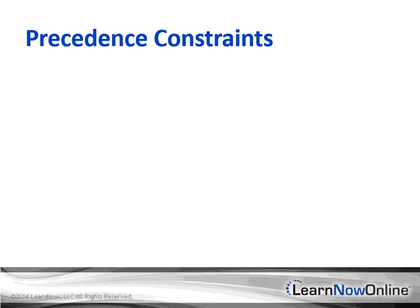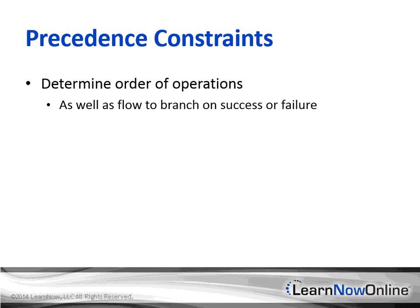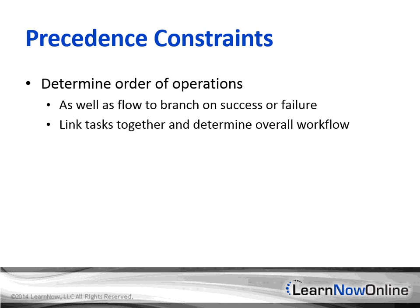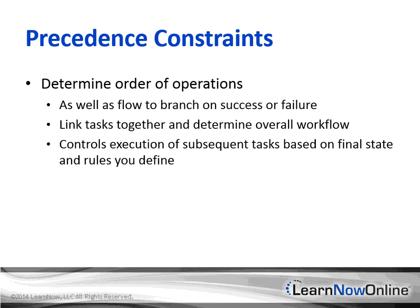Precedence constraints determine the order of operations through the control flow, and also allow the flow to branch based on the success or failure of a task. They link tasks together and determine the overall workflow defined within your package. A constraint controls the execution of a subsequent task based on the final state of the preceding task and the rules you define. The rules are based on expressions, which lets you control the workflow using just about any conditions you care to define.